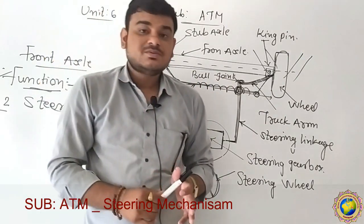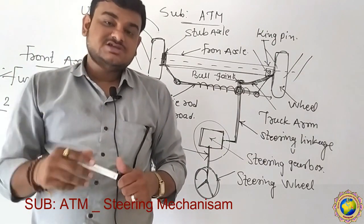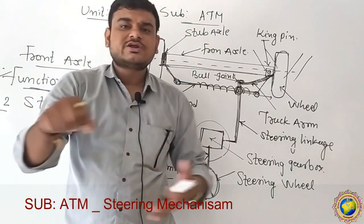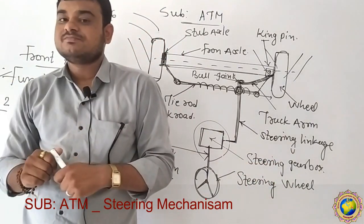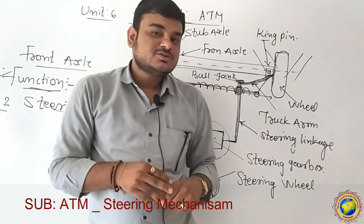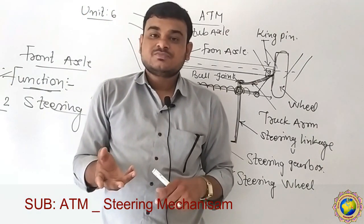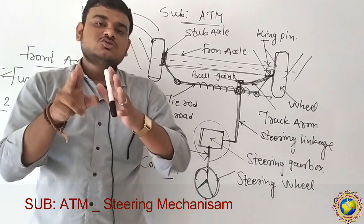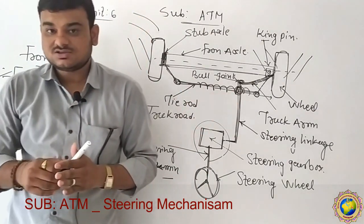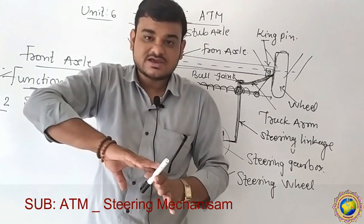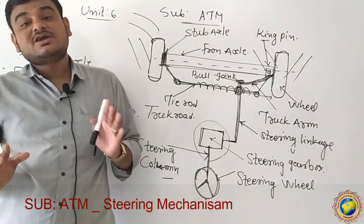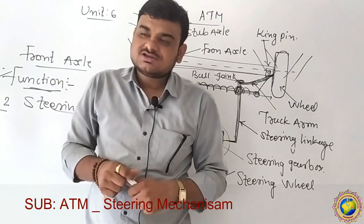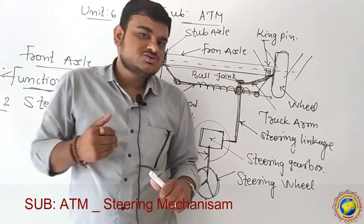In old vehicles like the GSRTC bus, the driver would have to rotate the steering wheel 3-4 times to turn. But in modern latest vehicles, power steering is used. With power steering, the driver's effort is much less. This makes it possible to take a fast turn quickly. This is a very effective steering mechanism for modern vehicles — it is called power steering.